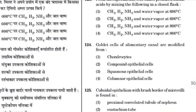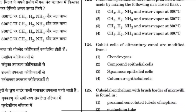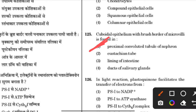Goblet cells of the alimentary canal are modified columnar epithelium cells. The answer is 4. Cuboidal epithelium with brush border of microvilli is found in the proximal convoluted tubule of the nephron.